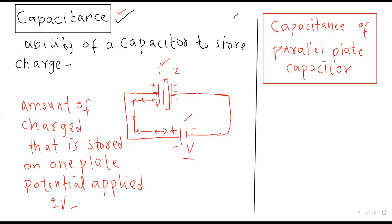جس plate کے ساتھ battery کا positive terminal attach کریں وہ positive ہو جائے گی اور جس کے ساتھ negative attach کریں وہ negative ہو جائے گی۔ یہ concept سمجھ آیا — دونوں capacitance کی definitions یاد کر لیں۔